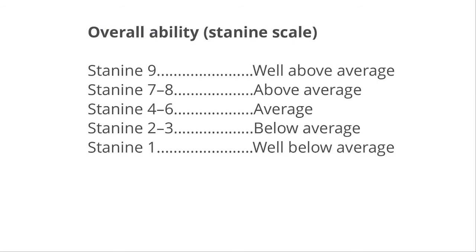Once you get your results, students fall into one of nine stanines in terms of their overall composite score: well below average, below average, average, above average, and well above average. Fifty percent of the population will fall in the fourth to sixth stanines, which is the average score. When using this as a selection tool, we're talking about students in the ninth stanine — generally the top 2% within school boards, although the ninth stanine represents the top 4% of the population.